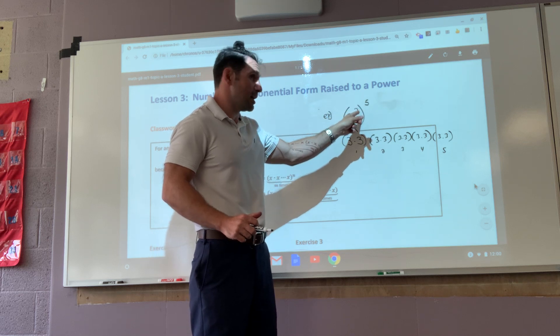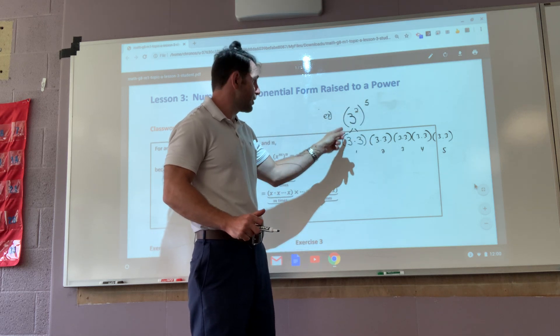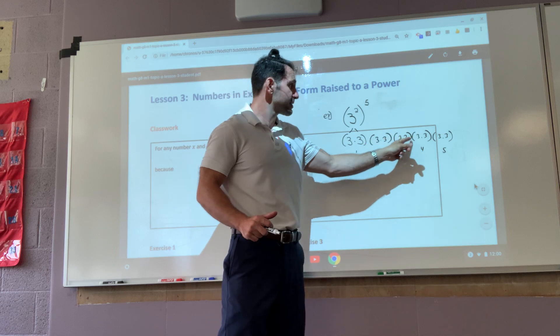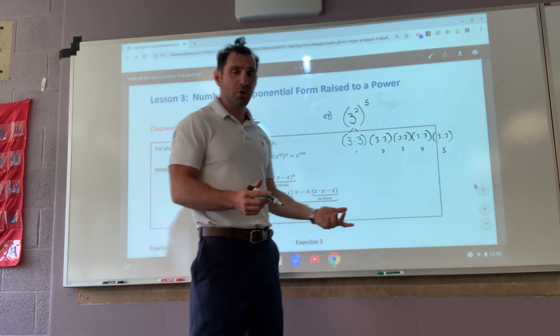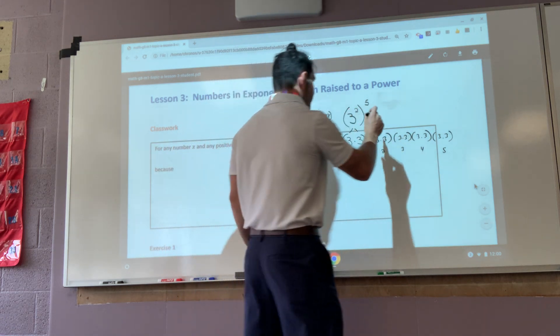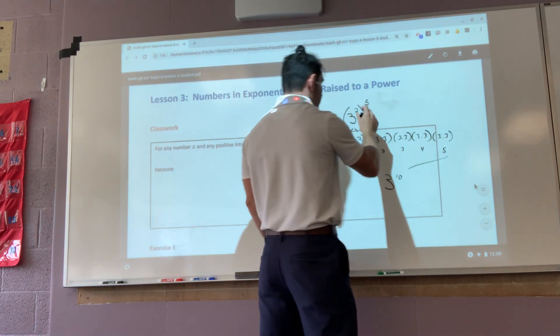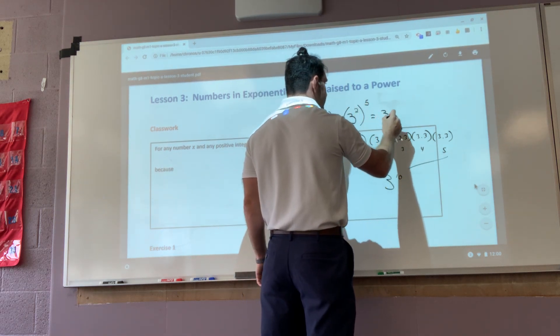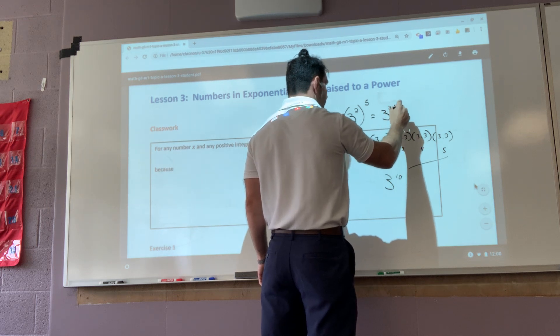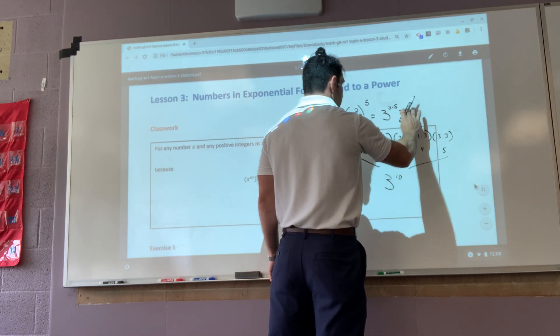So five times two is ten. How many threes do I have? One, two, three, four, five, six, seven, eight, nine, ten. That's three to the tenth. Wait a minute. All of this is three to the tenth. Another way that I could say this is three multiplied by two times five, which is ten.